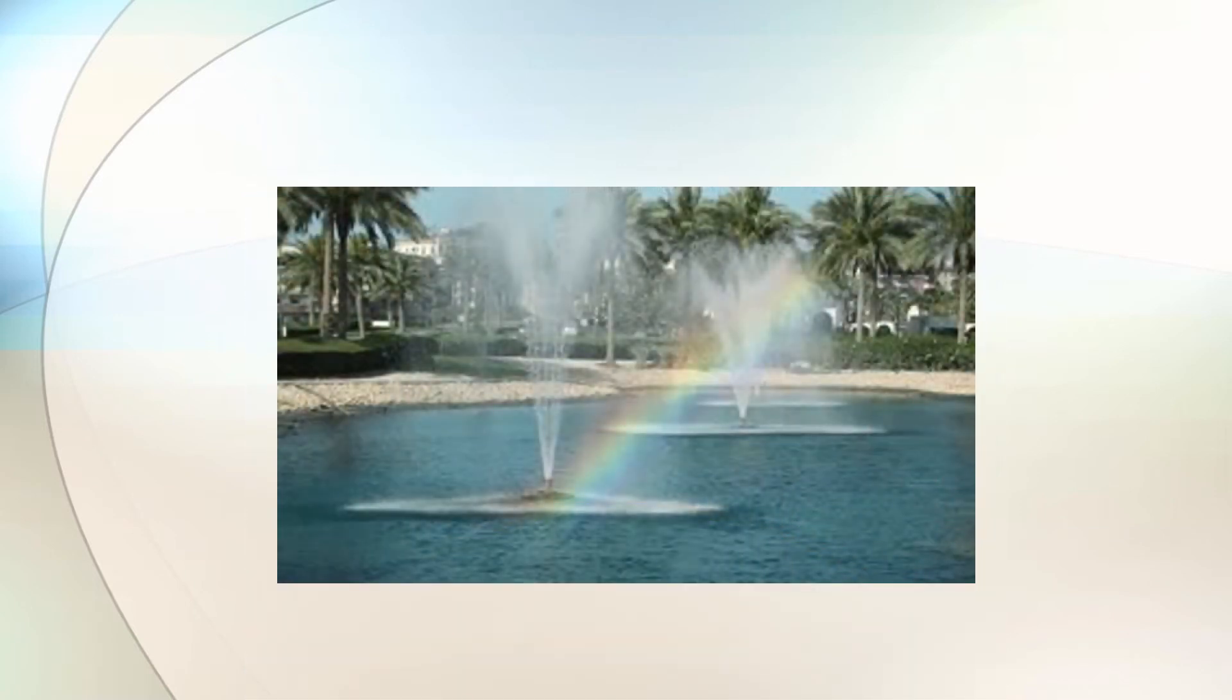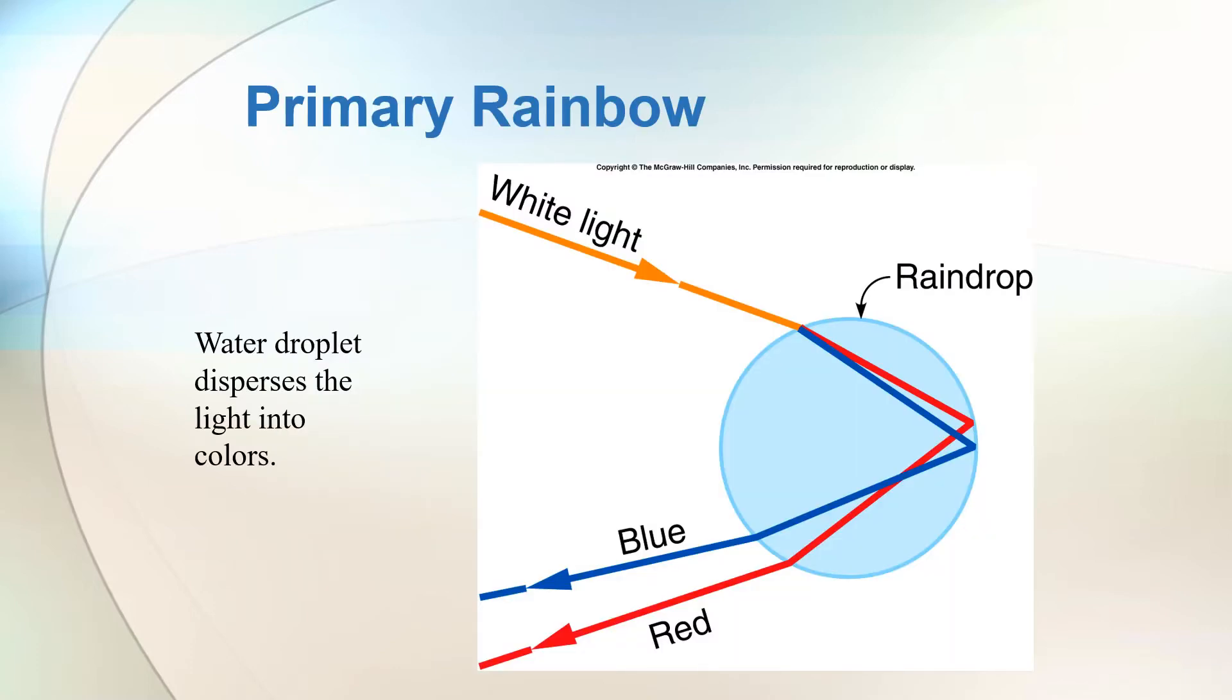Whenever there are water droplets, these water droplets serve as prism, allowing light to disperse into its different color spectrum. A raindrop or a water droplet disperses the light into colors.